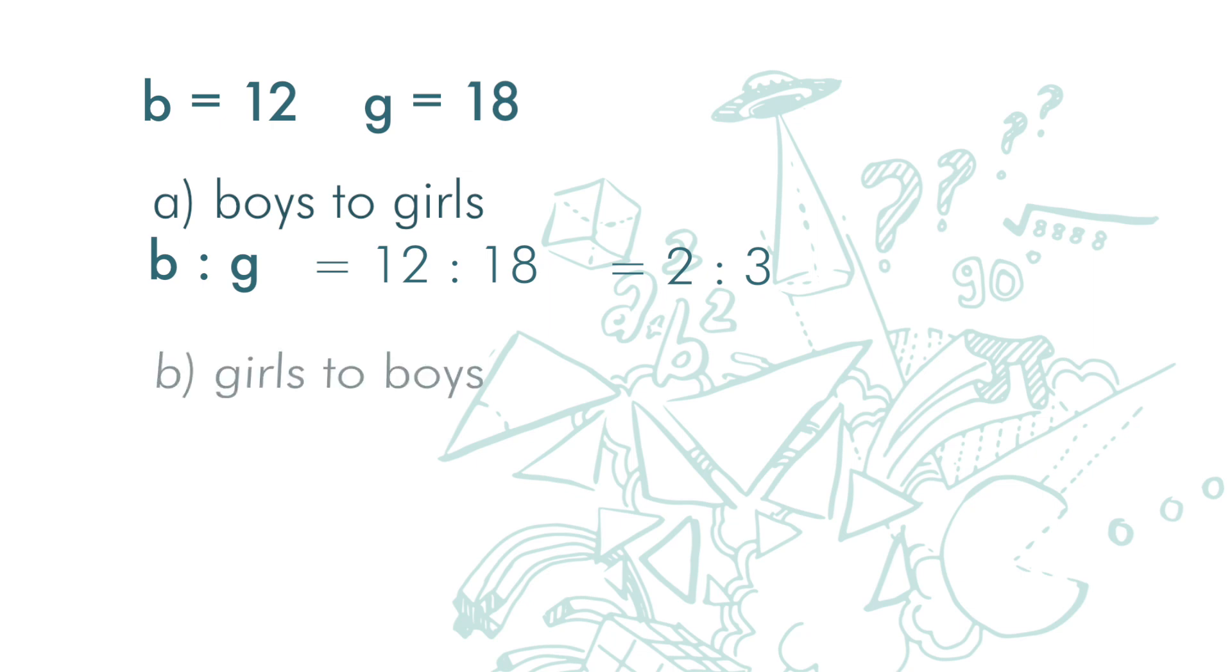The ratio of girls to boys is 18 to 12. Again, it can be simplified by dividing the ratio by 6, and we get 3 to 2.